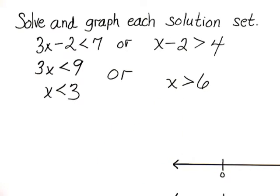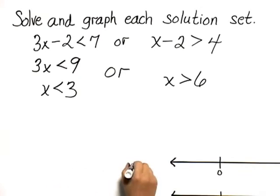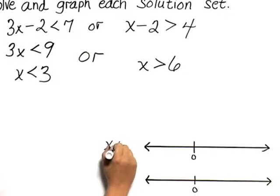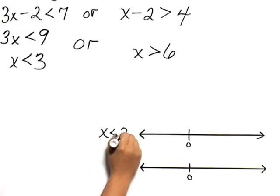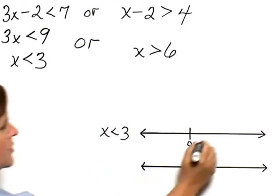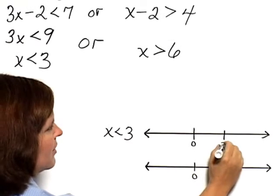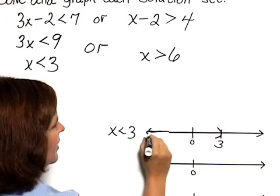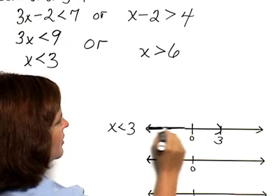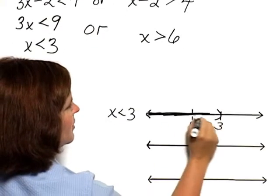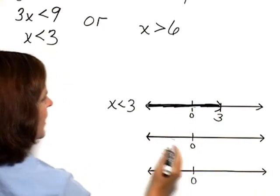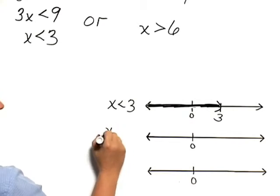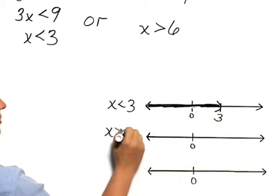In order to see what this set looks like, let's look at a number line. On the first number line, we will graph the set x is less than 3. So we mark off a 3, and we shade in the set x is less than 3. On the second number line, we look at the set x is greater than 6.